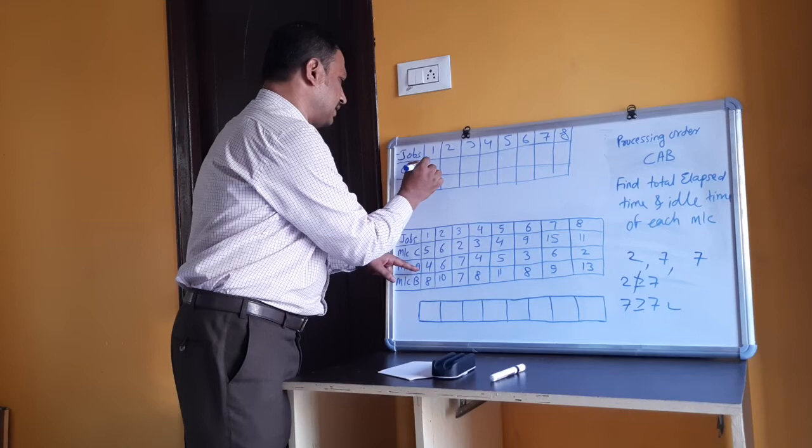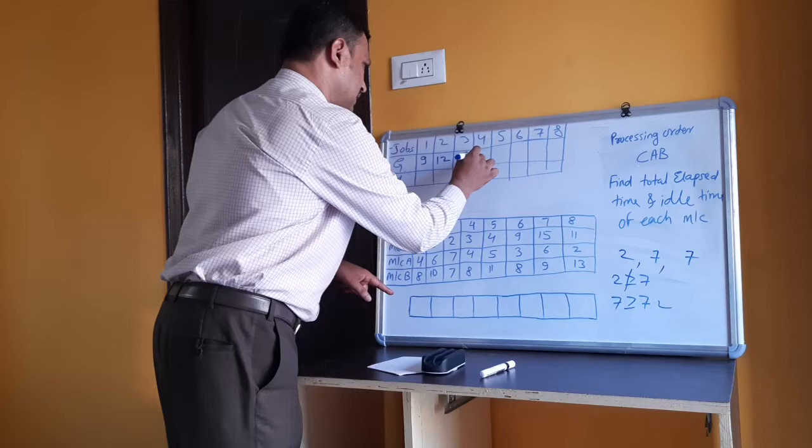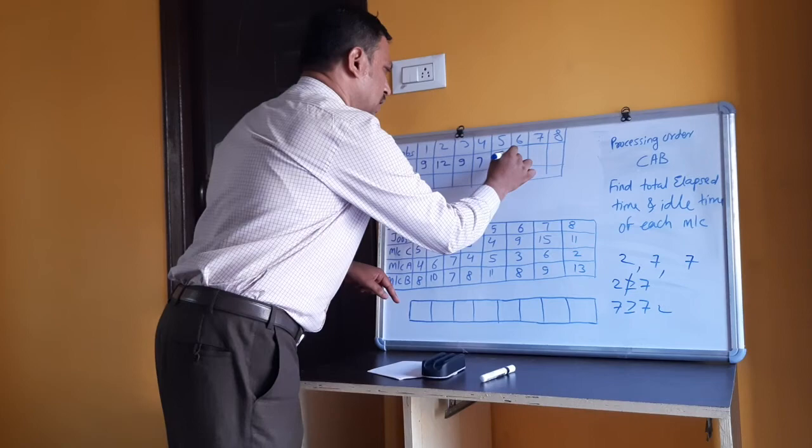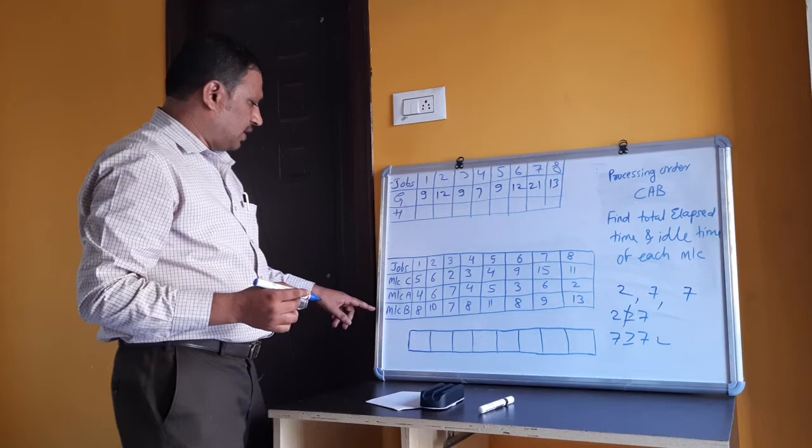For machine G: 5+4=9, 6+6=12, 7+2=9, 3+4=7, 4+5=9, 9+3=12, 15+6=21, 11+2=13.